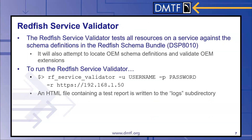The Redfish Service Validator tests all resources on a service against the schema definitions in the Redfish schema bundle. If OEM extensions are found on the Redfish service, it will also attempt to locate the OEM schema definitions and validate the OEM extensions against those schema files. To run the Redfish Service Validator, you would run the following from the command line: RF service validator with your Redfish username, password, and service address. After a few minutes, an HTML file containing a test report is written to the logs subdirectory.